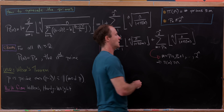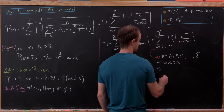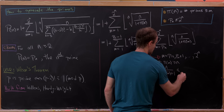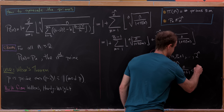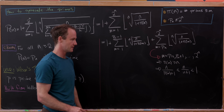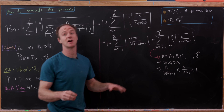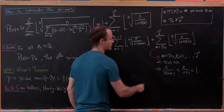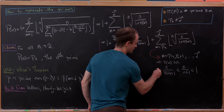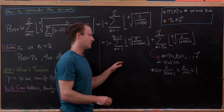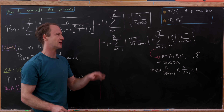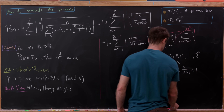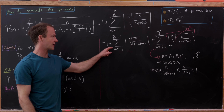For m equal to p_n, p_n plus 1, all the way up to 2^n, we have π(m) greater than or equal to n, since there are exactly n primes less than or equal to p_n. That means n over (π(m) plus 1) is less than or equal to n over (n plus 1), which is strictly less than 1. Taking the nth root keeps it strictly less than 1, and since it's bounded below by 0, the floor of each such term is 0.